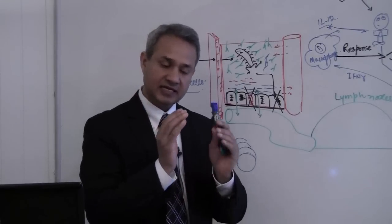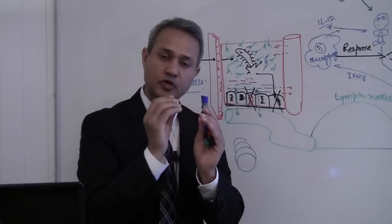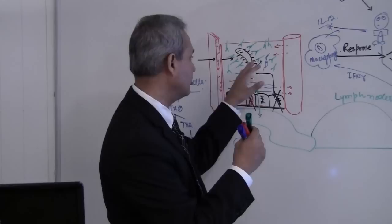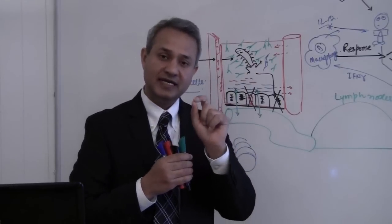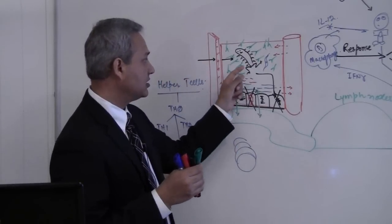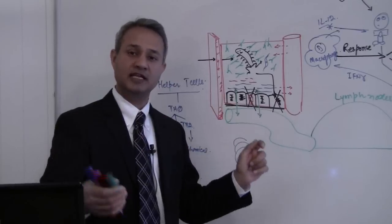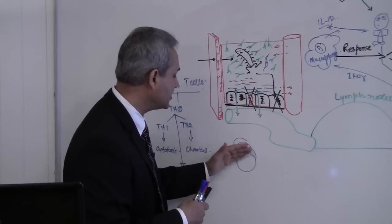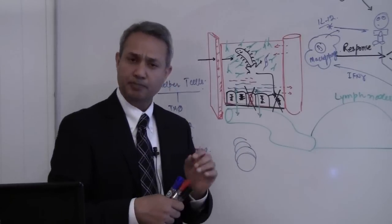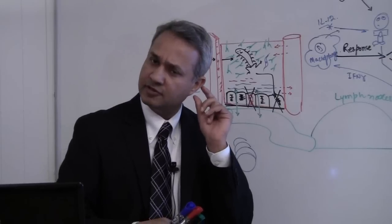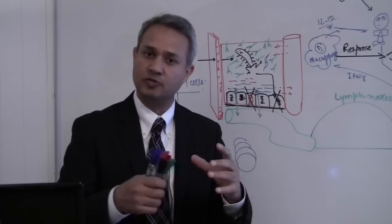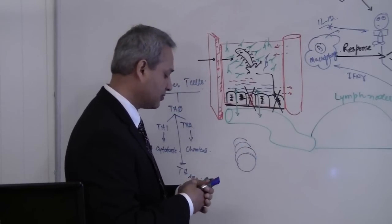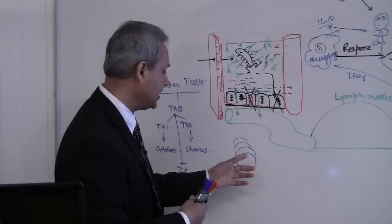A B cell can sit in a lymph node and continuously make immunoglobulins to send them out to fight extracellular pathogens. A T cell cannot just go and take care of all the cells which are infected. Normally a T cell makes a great number of replicas — B cells make replicas as well — and that is why we get pain in our lymph nodes when T cells or B cells are replicating.